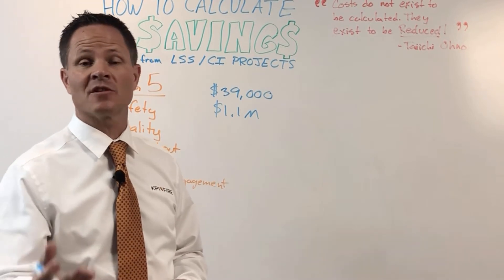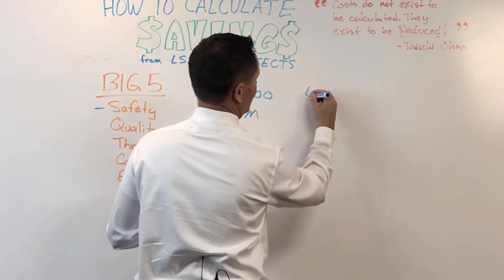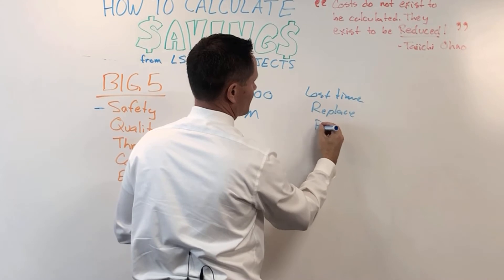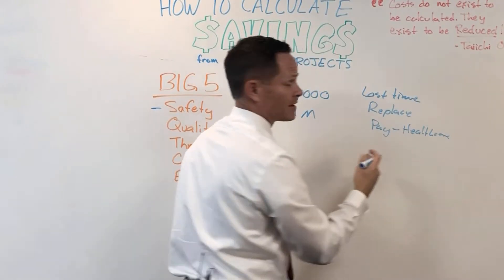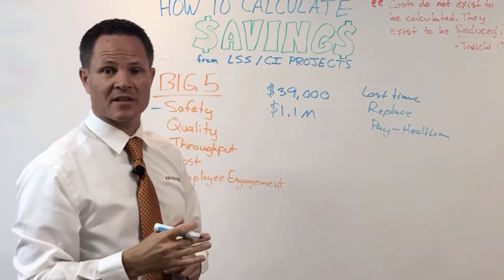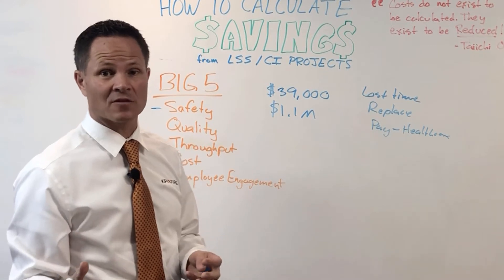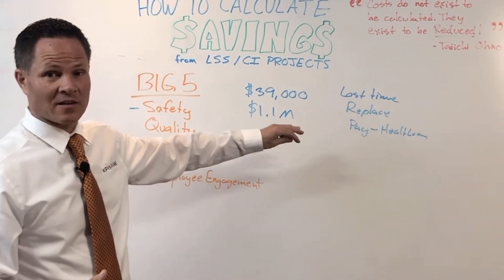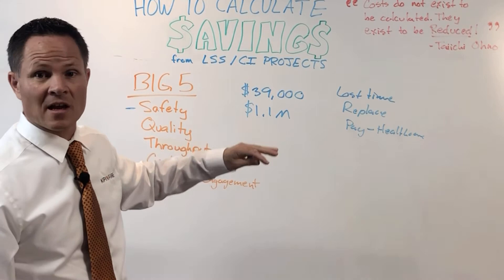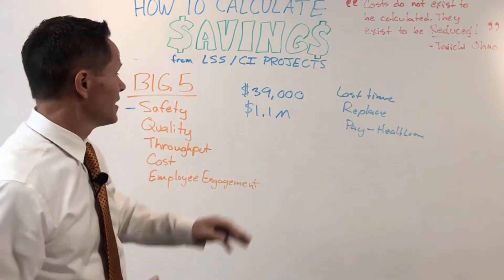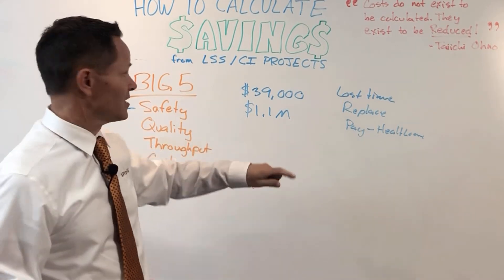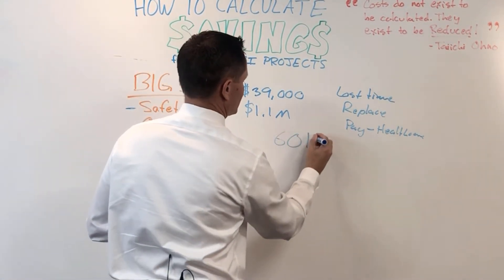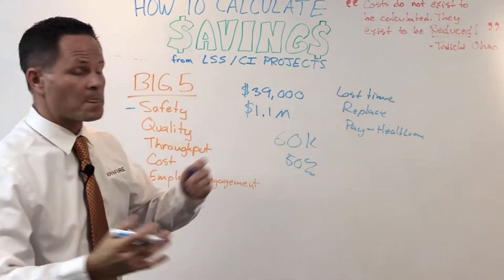You can calculate this on your own by figuring out how much lost time, time to replace an employee, time to pay for their healthcare, and the lost productivity that occurred when that injury happened. I've been in factories where people have gotten injured and there's a lot of downtime and paperwork. So if you do a project that reduces your safety risk by 50% and you average three injuries a year, you can say you saved one and a half injuries, multiply that by $39,000, and get a savings of about $60,000.